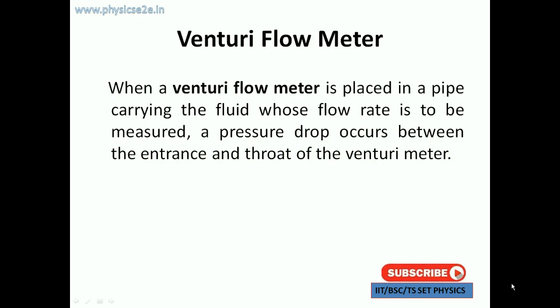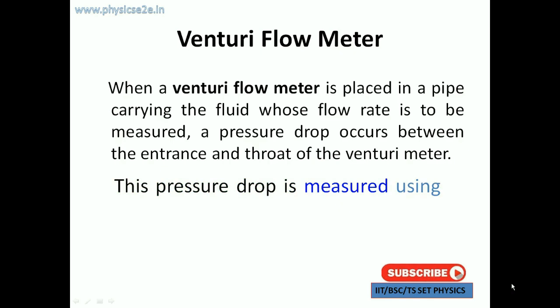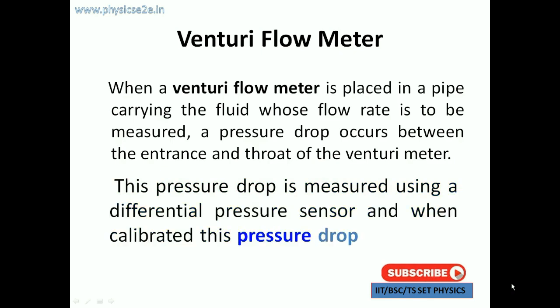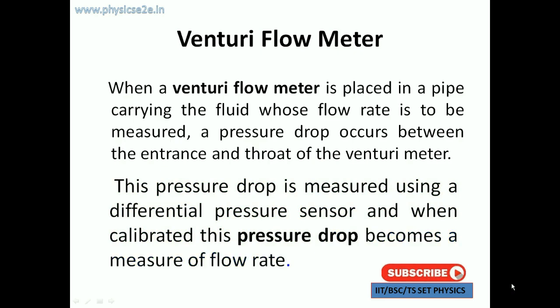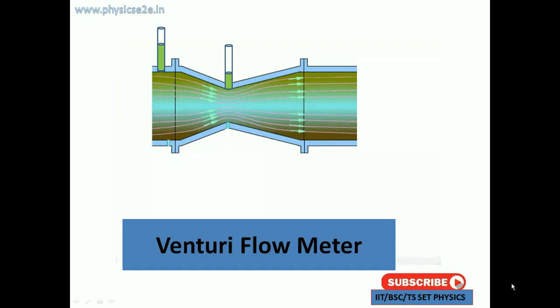The Venturi flow meter is placed in series in the pipelines of which fluid flow rate is to be measured. The throat and inlet are the major parts of the Venturi flow meter. This pressure drop is measured using differential pressure sensors, and when calibrated, the pressure drop becomes a measure of flow rate.